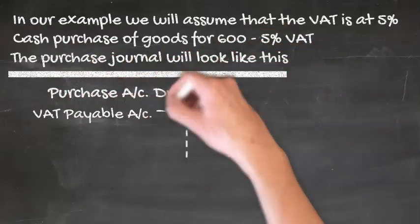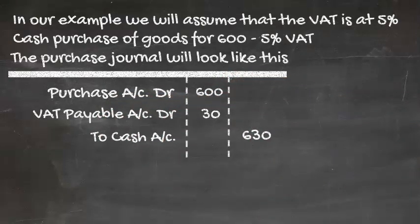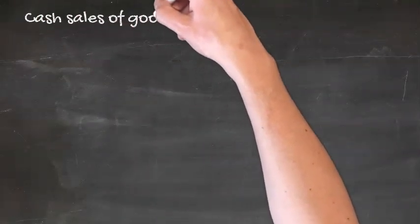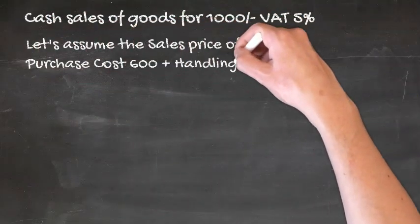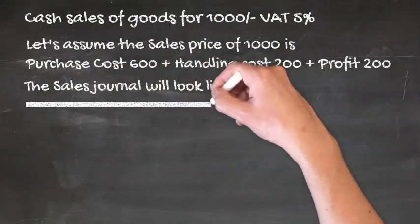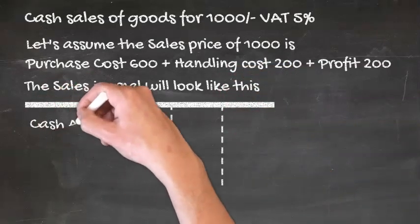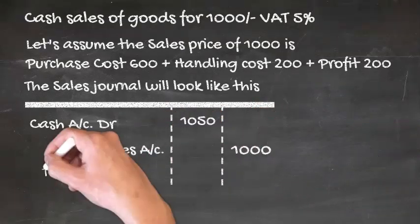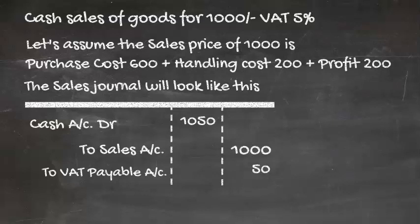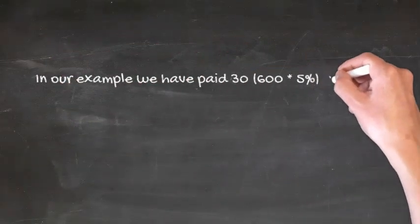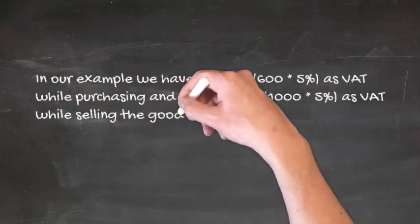The journal entry for a cash purchase of goods worth $600 with 5% VAT will be: Purchase account debit $600, VAT payable debit $30 (that is 5% of $600), and cash credit $630 — the paid amount. For the sale, we have assumed that the seller added $400 to the cost of the product — $200 as handling charges and $200 as profit — to arrive at a selling price of $1,000. The journal entry for this cash sale of $1,000 with 5% VAT will be: Cash account debit $1,050, Sales account credit $1,000, and VAT payable credit $50 (that is 5% of $1,000). So in our example, we paid $30 as VAT while purchasing and collected $50 as VAT while selling the goods.